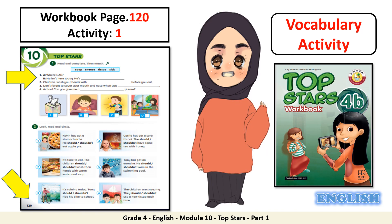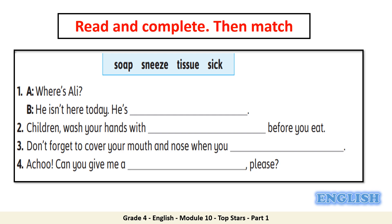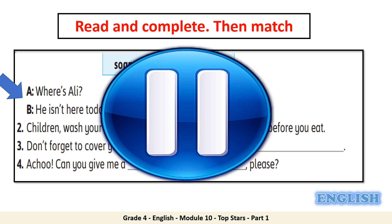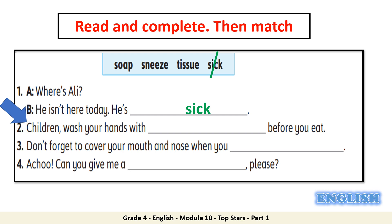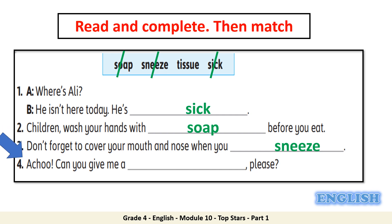Let's practice. Open your workbook page number 120, activity number 1 — read and complete the match. In this activity you will read the sentences and complete the gaps with the words in the blue box. I will do the first one for you as a model. Pause the video and do the rest by yourself. Welcome back. Let's check your answers: 2 — children, wash your hands with soap before you eat; 3 — don't forget to cover your mouth and nose when you sneeze; 4 — can you give me a tissue, please.